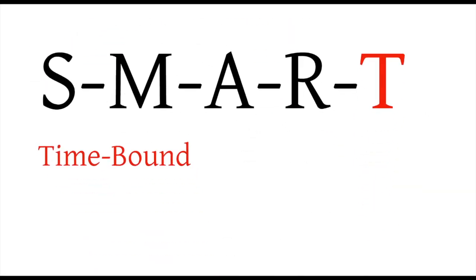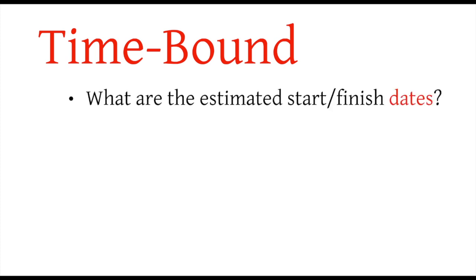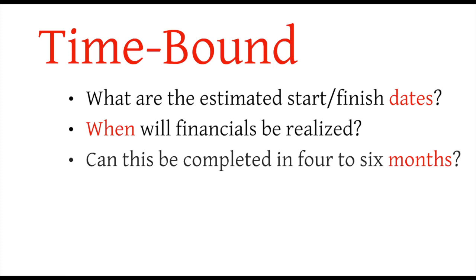The final section is T for Time Bound. Here is where the estimated duration of the total project is documented, as well as the team members and resources required to successfully complete the improvement. This is very much like the project's schedule. Some questions you should be able to answer might be: what are the estimated start and finish dates? When will the financials start to be delivered and when will they be completed? Can this project be completed within four to six months?